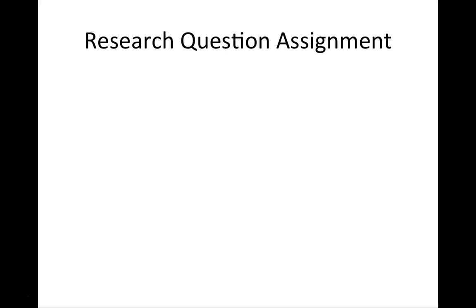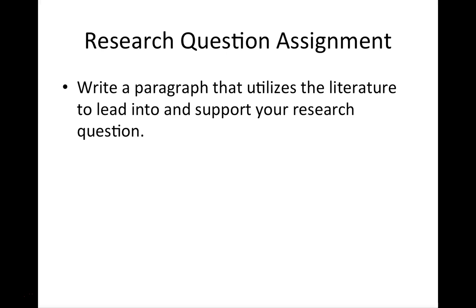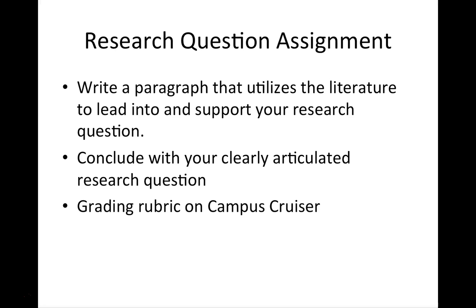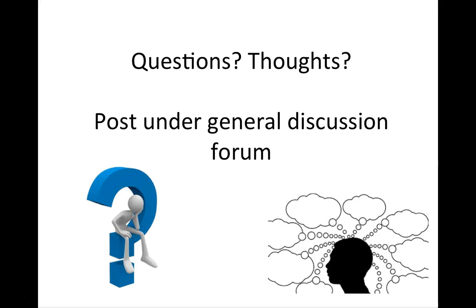A quick overview of the research question assignment: as noted in the assignment, you'll write a paragraph that utilizes some of the literature — you don't have to have a full literature review here — but utilizes the literature to lead into and support your research question. You'll conclude that paragraph with your clearly articulated research question. I want to know what your independent and dependent variables are just from looking at that question. The grading rubric is on Campus Cruiser. If you have specific questions, email me; for broader questions, post under the general discussion forum.